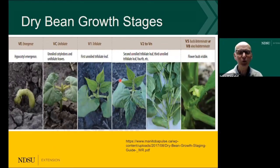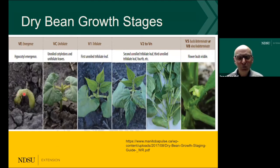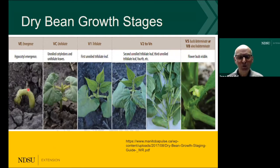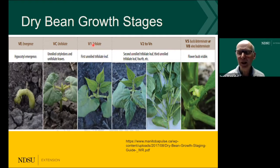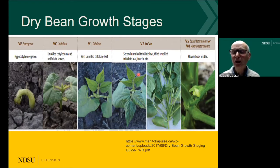Let's look at a few pictures. The first one shows the crook stage, and for those interested in land rolling, this is a very dangerous time to roll because if we damage this we damage the plants too much. Here we see the unifoliates, and here the first trifoliates — that's the V1 stage. As the plant starts to develop we see more leaves, and we call each set of three leaves a V stage.